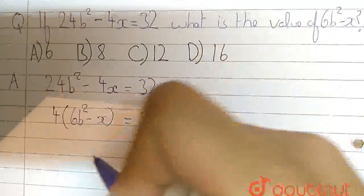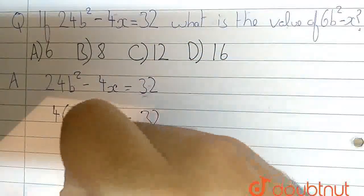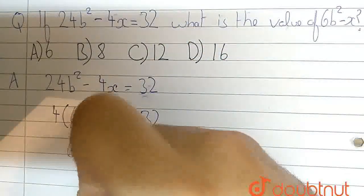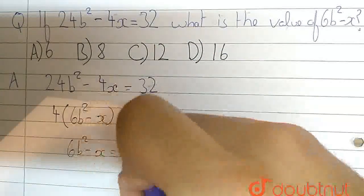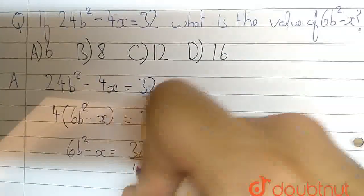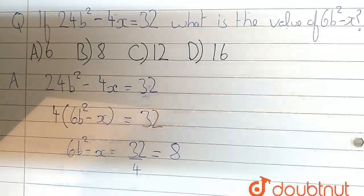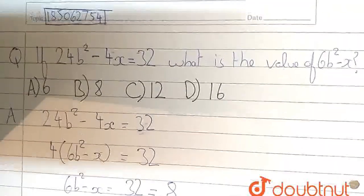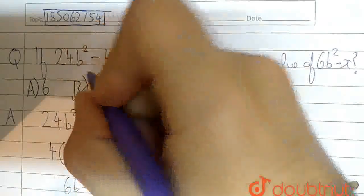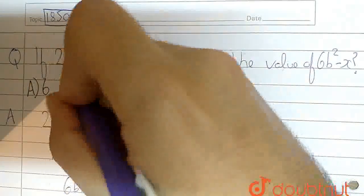So, simply we will divide both sides by 4. And we get 6b² - x equal to 32 by 4, which is 8. So, we just choose option B is equal to 8.